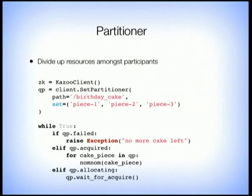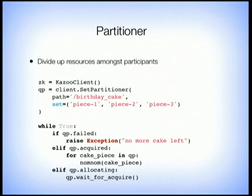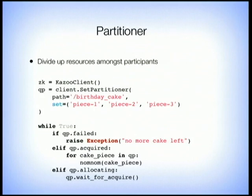Partitioner is another powerful use case — it divides a workload amongst any number of workers. Homogenous workers who don't know anything about each other can coordinate at a central location and make sure only one of them is doing a specific piece of work at a time. We're going to partition a birthday cake into only three pieces. In a while loop, you try to acquire a partition — if it fails, you don't get any cake; if you've acquired it, you can have any number of pieces. If not acquired, you're waiting in line.